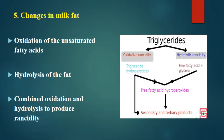Changes in milk fat during microbial growth include oxidation of unsaturated fatty acids and hydrolysis of fat — the breakdown of fatty acids from glycerol. Normally lipids are present as triglycerides, where three fatty acid molecules are connected as esters with glycerol. Combined oxidation and hydrolysis produces a very offensive smell called rancidity. Oxidative rancidity involves oxidation of unsaturated fatty acids; hydrolytic rancidity involves breaking free fatty acids from ester linkages producing free fatty acids causing undesirable odor.